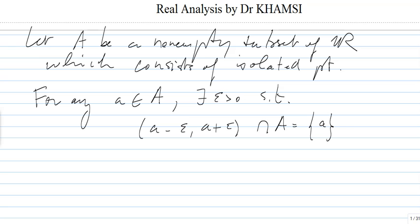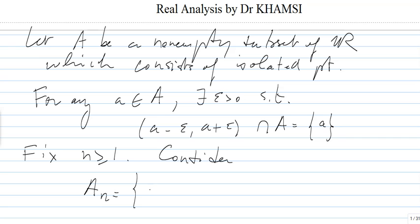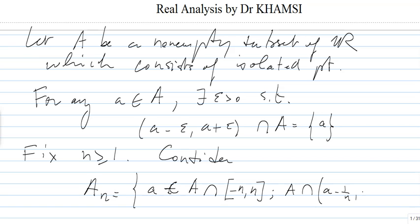We want to show that A is countable. For that, fix N greater than or equal to 1, and consider A_N to be the set of a in A that intersects the interval (−N, N), such that A intersected with (a − 1/N, a + 1/N) is reduced to {a}.